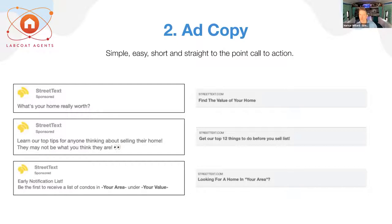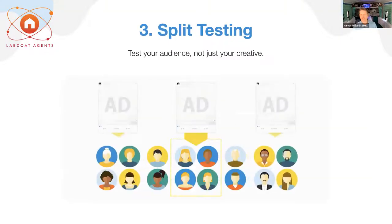Number two is ad copy — simple, easy, short, straight to the point, with a clear call to action. One of my favorite seller-side ads is 'What's your home really worth?' with the call to action: 'Enter your address to receive your home value.' The key is there's integrity in that ask — you're not asking for everything up front, just their address to get them that home value. Simple, easy, short, straight to the point.